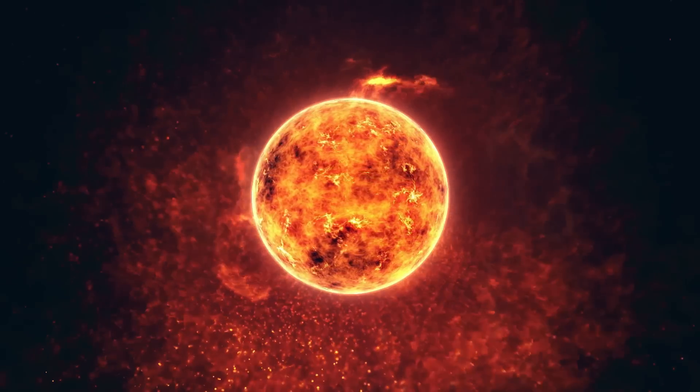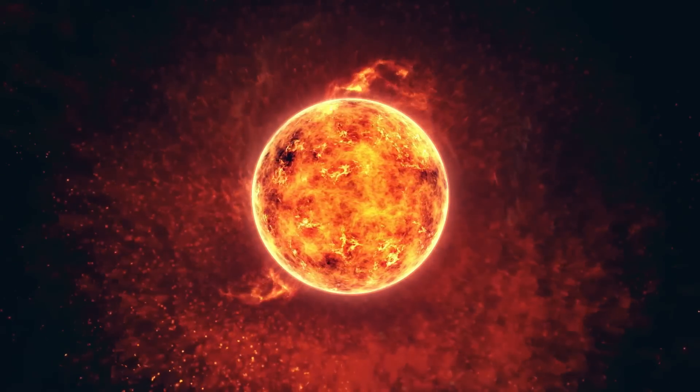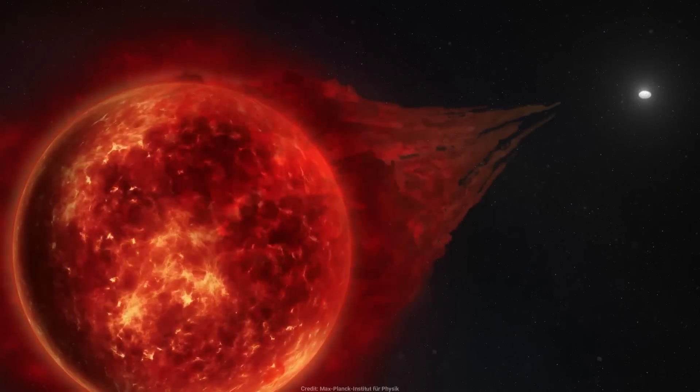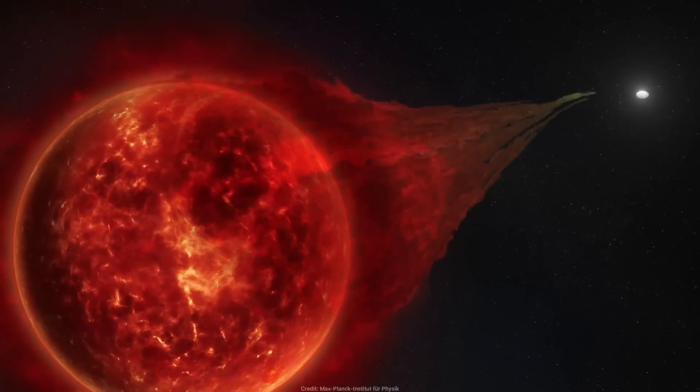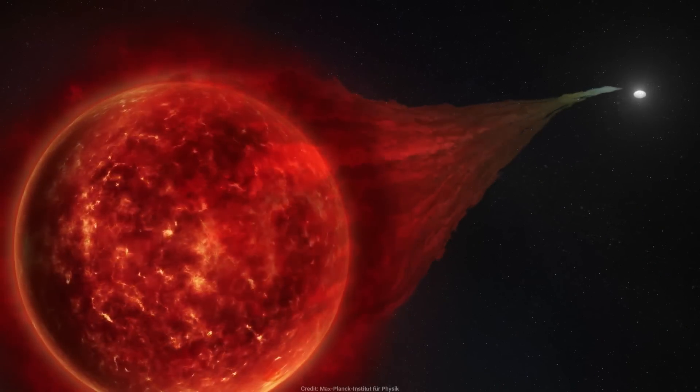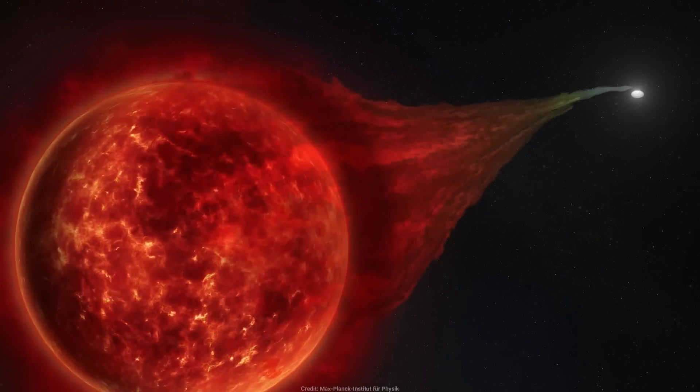The red giant is bloated and cool, shedding its outer layers as it nears the end of its life. This mass transfer is the critical piece of the puzzle in understanding why T Coronae Borealis is known as a recurrent nova.